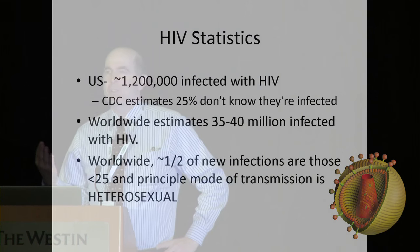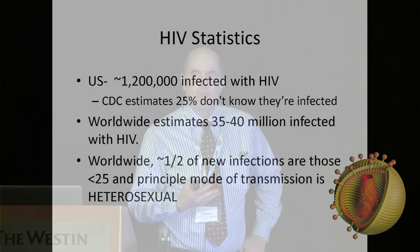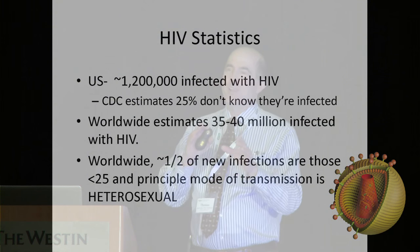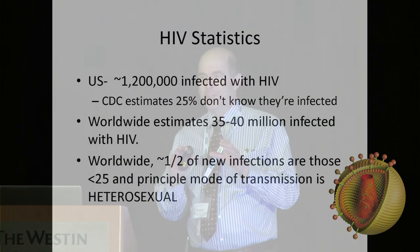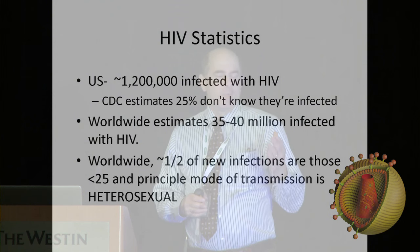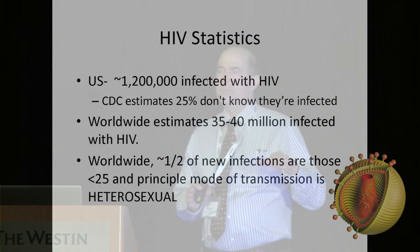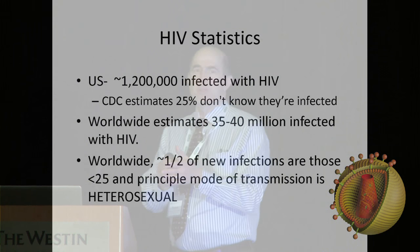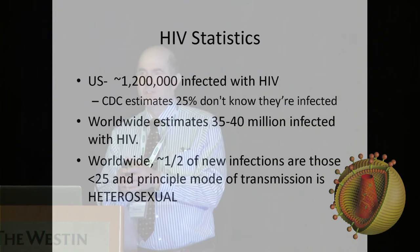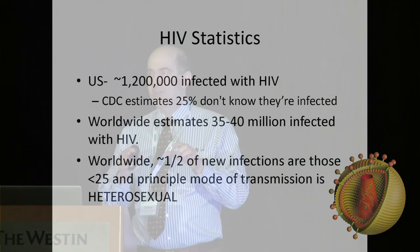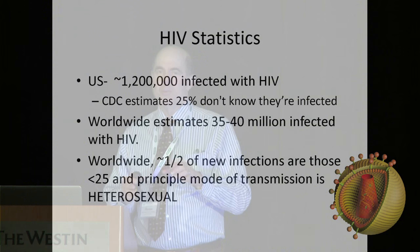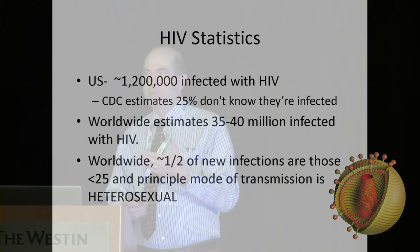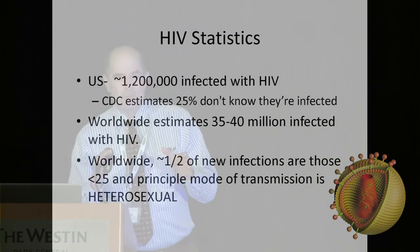In the US, it's believed there are about 1.2 million people infected, and the CDC estimates about 25% don't know they're infected. Interestingly, when AIDS first appeared in the mid-1980s, the CDC was saying there were probably about a million people in the US with this disease. With people now surviving virtually indefinitely with HIV, there may be more today.